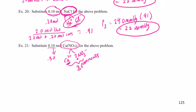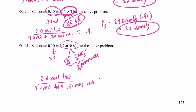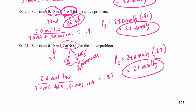So the mole fraction of solvent is even lower: 2.0 moles of water ÷ (2.0 + 0.30 moles of ions) = 2.0 ÷ 2.30 = 0.87. So P₂ = 24.0 mmHg × 0.87 = 21 mmHg. The vapor pressure is even lower.